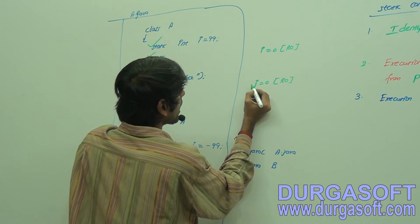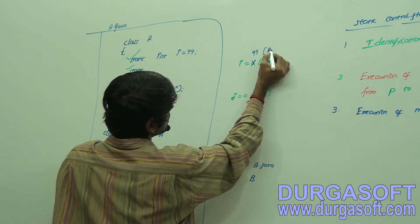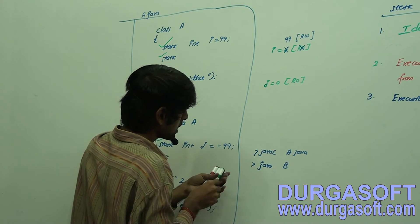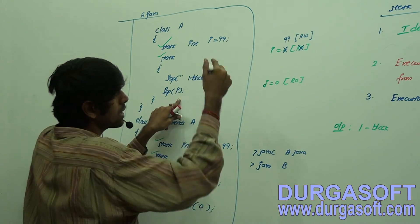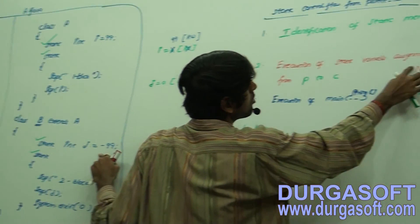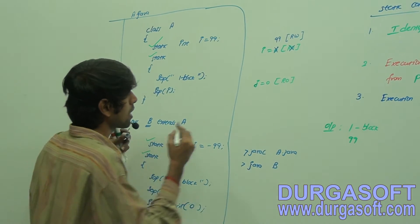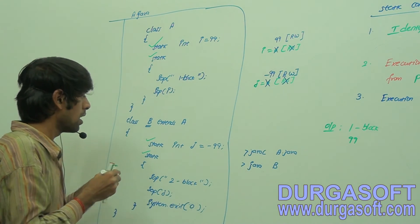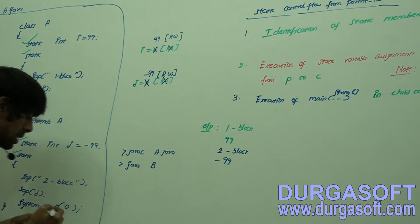When JVM assigns the actual value to i (double-line), i moves from read-only to read-write state. Then the first static block executes — output is 'first block' and the value of i is double-line. Next, j is overwritten from 0 to minus double-line, moving to read-write state. Then the second static block executes — output is 'second block' and the value of j is minus double-line.